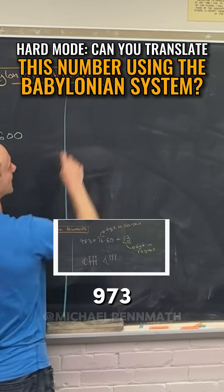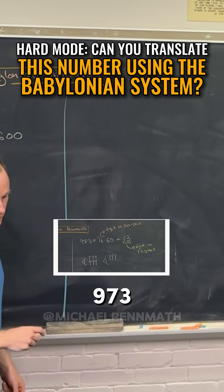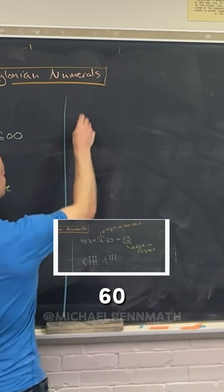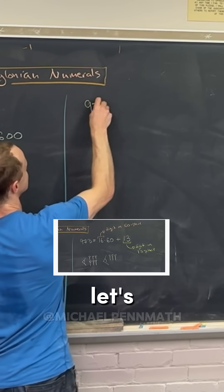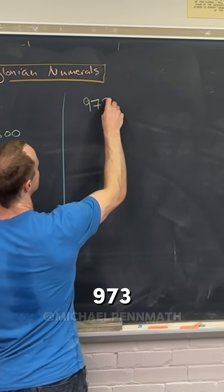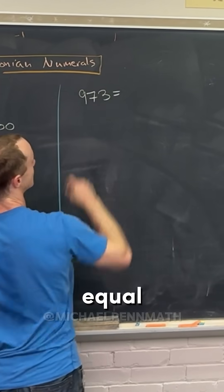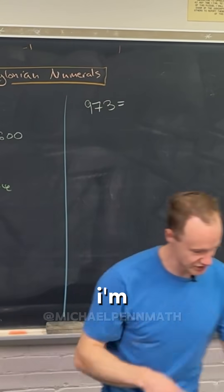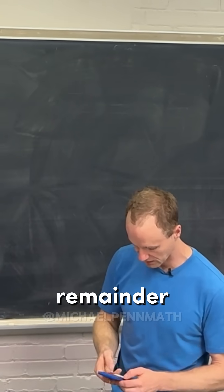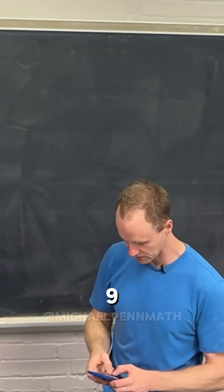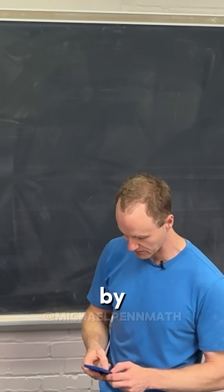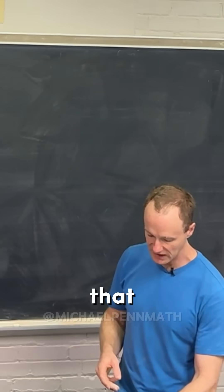Let's do 973 divided by 60. So 973 is equal to — I'm just going to do the same division with remainder like we did before. So 973 divided by 60.